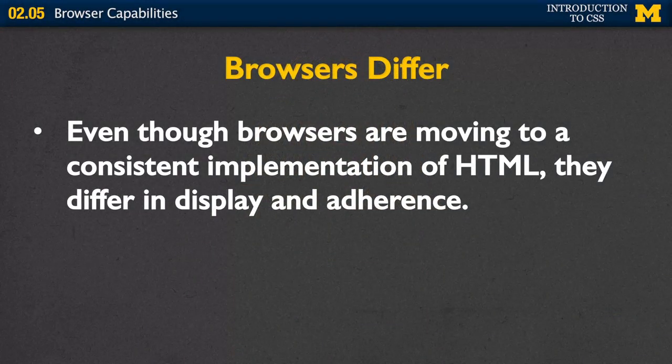Hi everyone! Today we're going to talk about browser capabilities and what you can do to make sure that your sites have a consistent appearance regardless of how people are accessing it. So even though HTML5 has really been pushing the browser developers to all come to a consistent implementation, they really differ in display and adherence to the new tags that are coming out. And as browsers update and change and new browsers come out, you're going to have to keep in mind that not everybody is looking at your page the same way that you are.